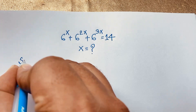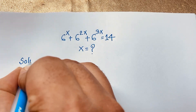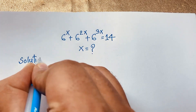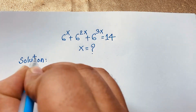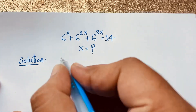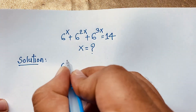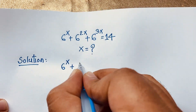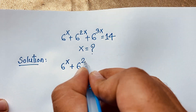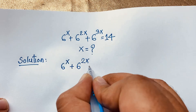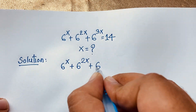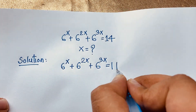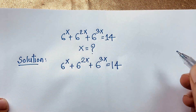So, solution. Our question is: 6 to the power x plus 6 to the power 2x plus 6 to the power 3x is equal to 14. This is our question.